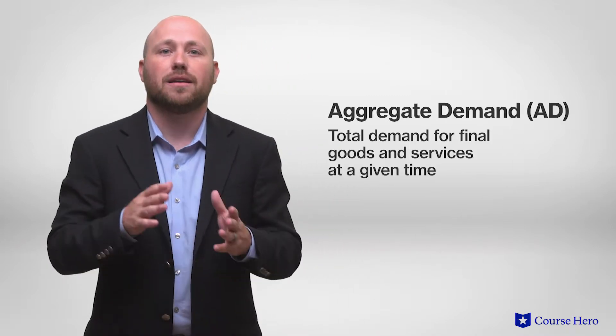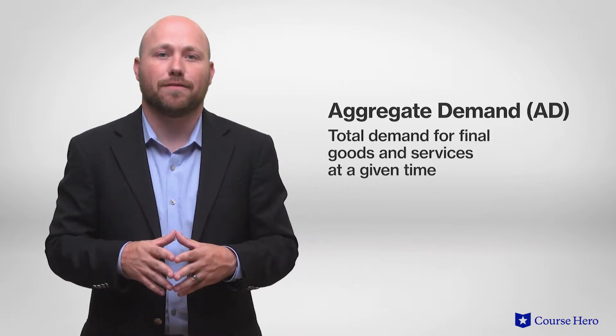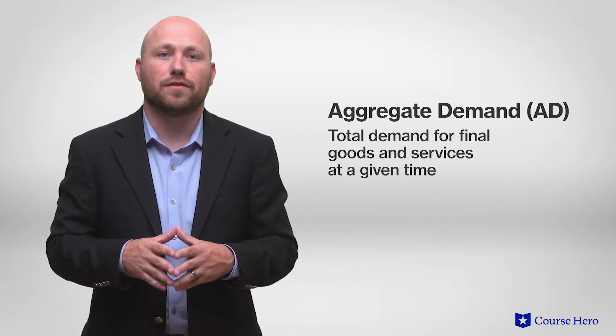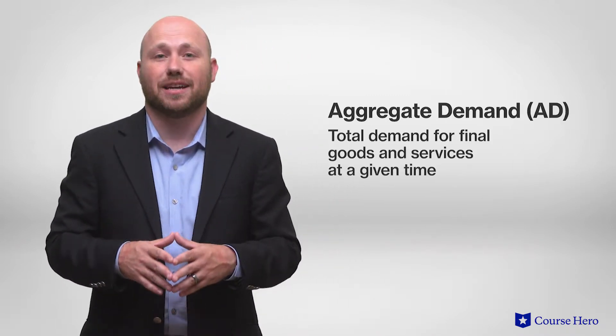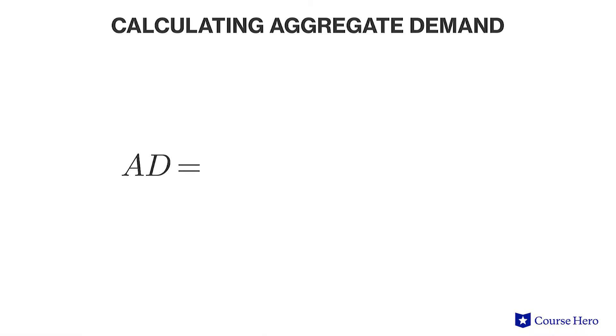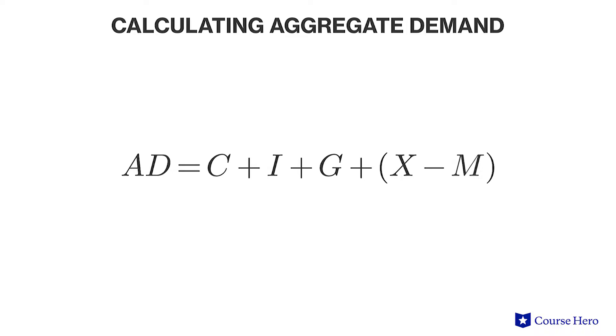The stability of an economy is affected by the aggregate demand, the total demand for final goods and services at a given time. Aggregate demand depends on consumption, investment, government spending, and the difference in exports and imports.